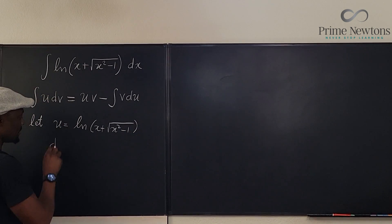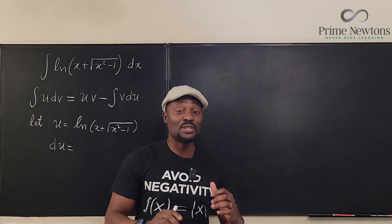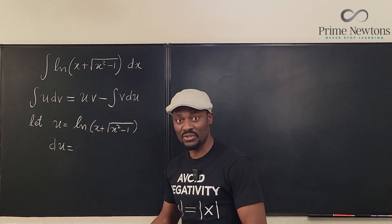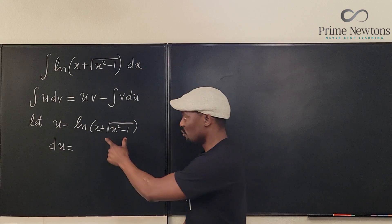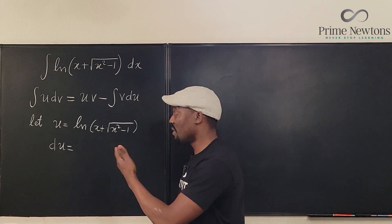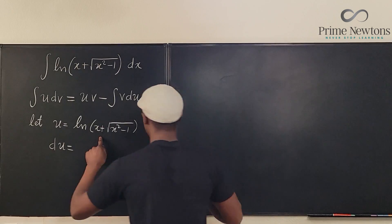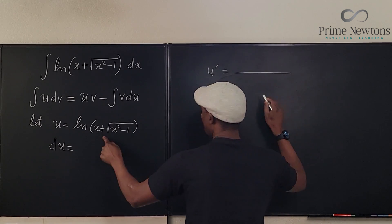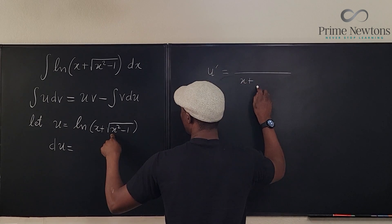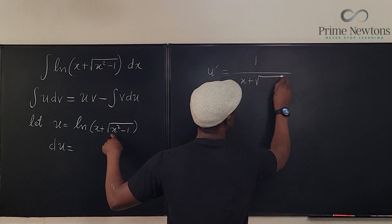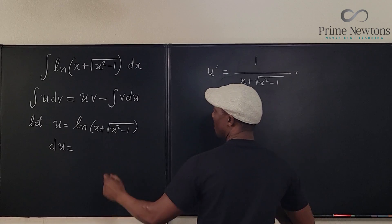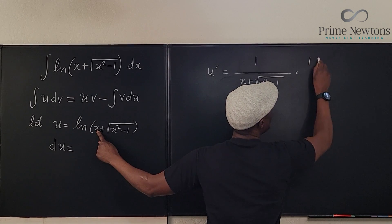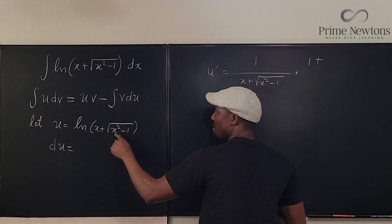So now we need to find du. This is where the work is, because if you want to differentiate this — the fastest way to do it is the derivative of what you see inside divided by what you see. So u prime is going to be 1 over x plus the square root of x squared minus 1, multiplied by the derivative of what's inside. What's the derivative of x? It's 1.